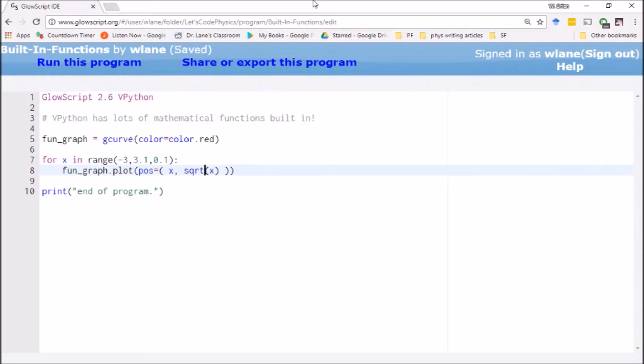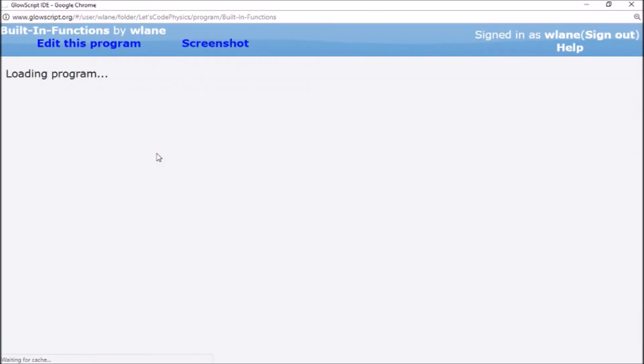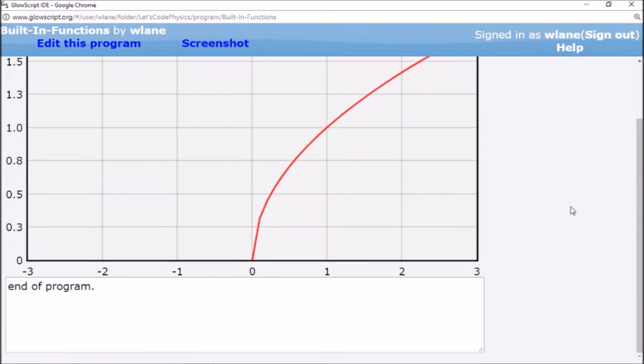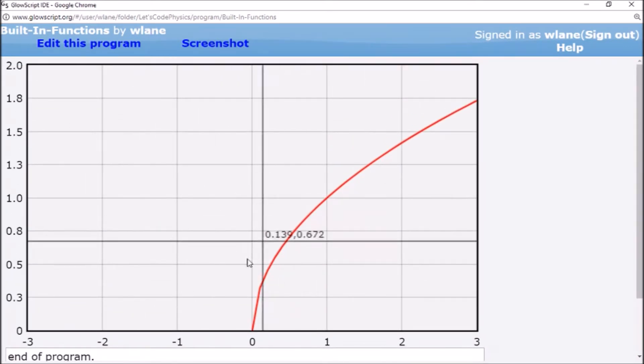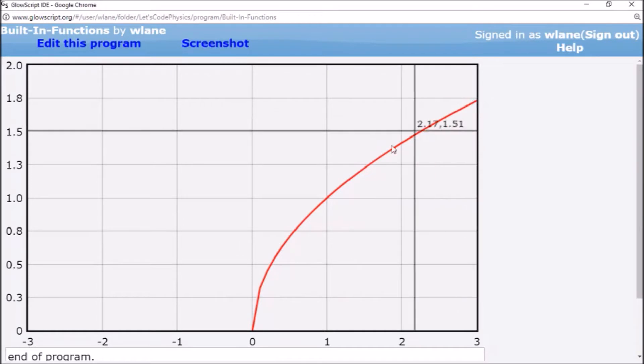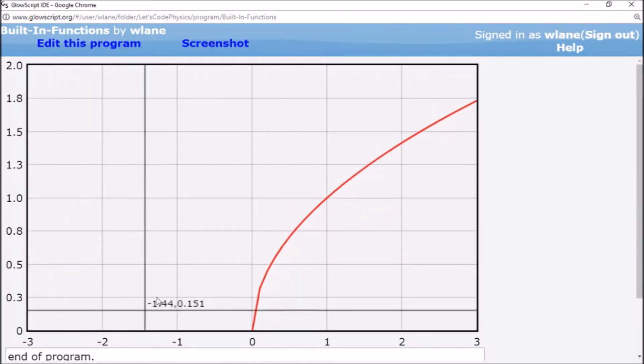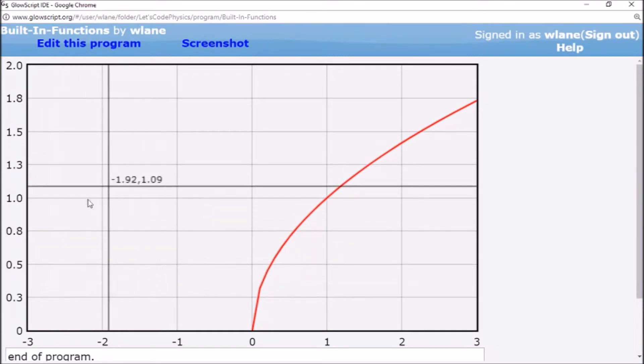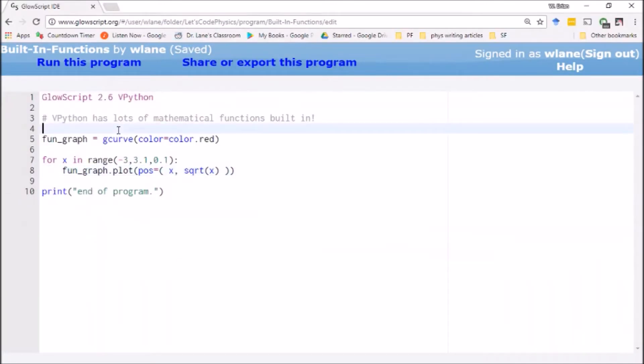vPython also knows what the square root function looks like. Let's leave in the negative. Let's see what happens if I try to give it a negative number. It didn't complain at me. It just didn't produce any results. So of course the square root function looks like a sideways parabola. It's of course giving me nothing for negatives since I don't think it takes the square root of a negative number.